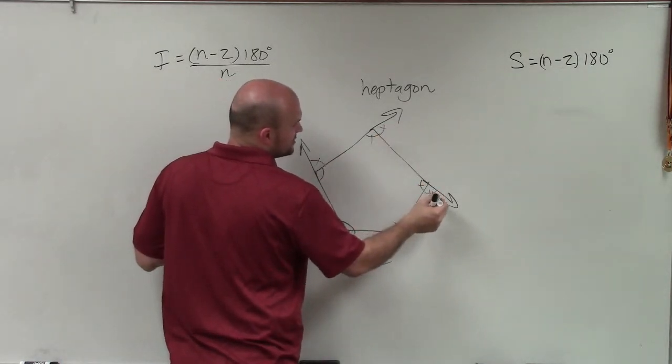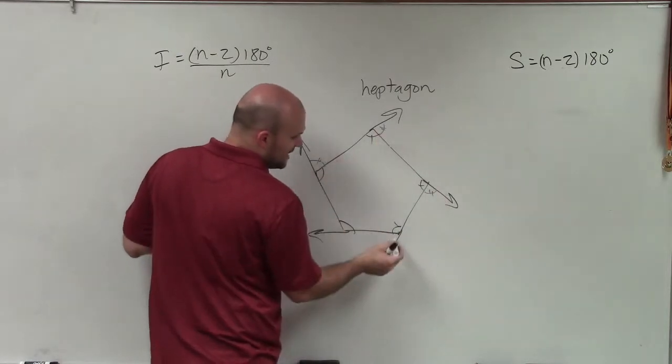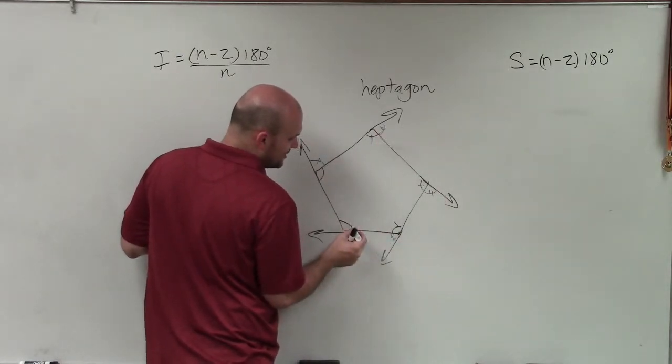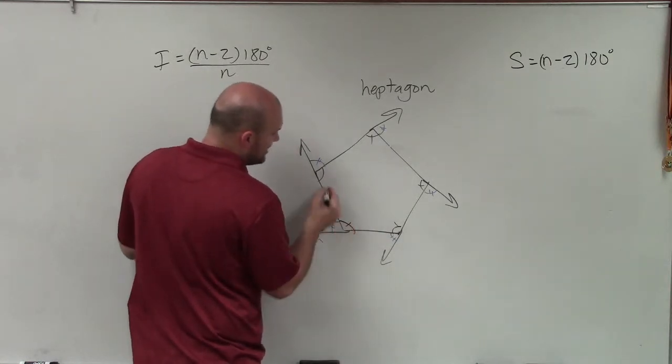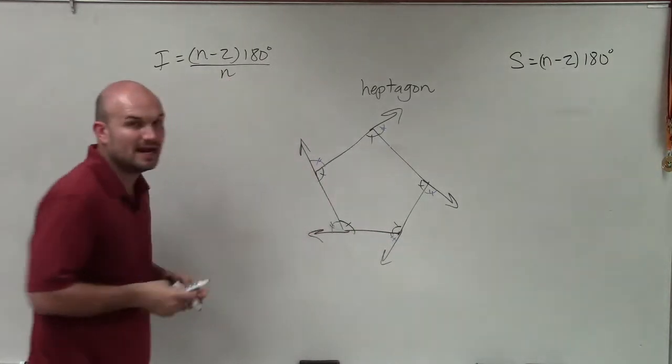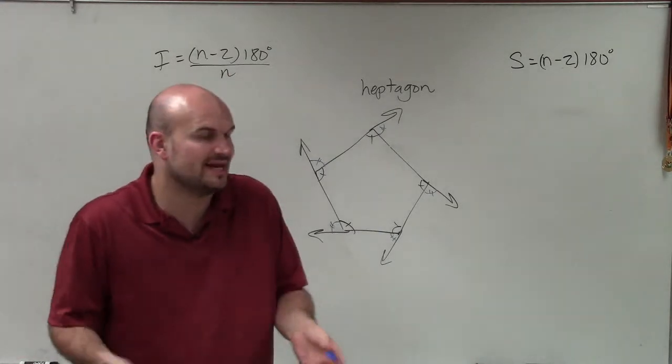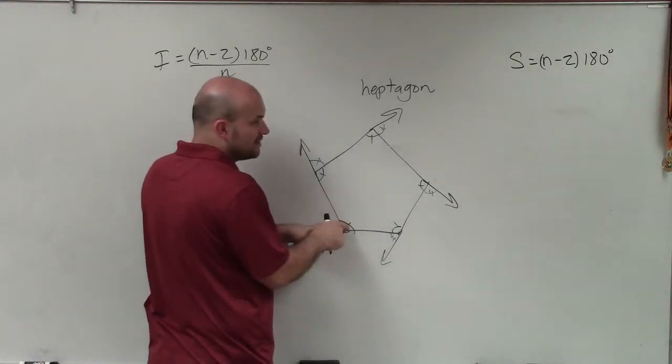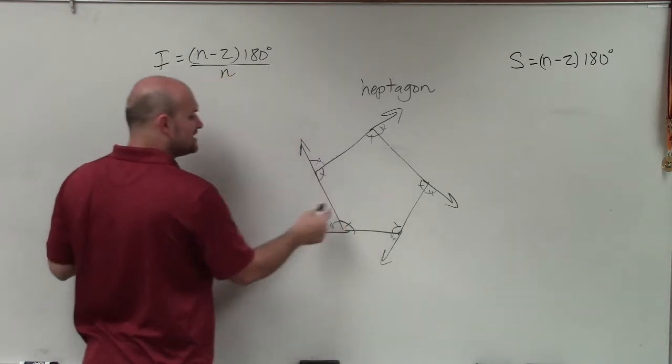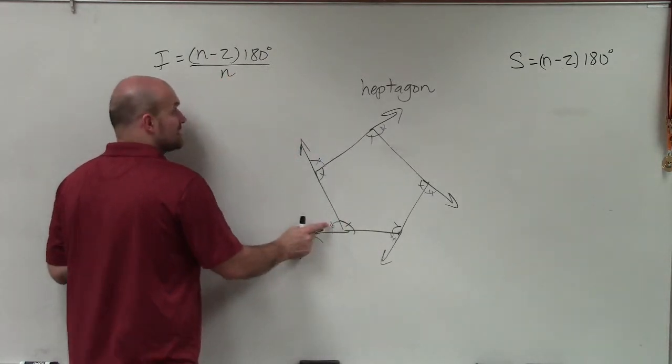And what's really important for us to understand about these exterior angles is the exterior angle and the interior angle are supplementary. They create a linear pair, right? They add up to 180 degrees. So therefore, if I can find just the measure of one interior angle, then all I got to do is subtract it from 180 to find the measure of the exterior angle.